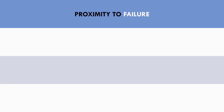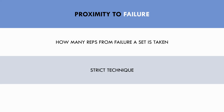So what does proximity to failure even mean? Proximity to failure simply refers to how many reps from failure a trainee performs a set. When we say failure, we are referring to failure to complete another rep with strict technique. So if a trainee starts swinging or jerking, or cuts range of motion, then the set has already been taken to failure. Each set should be taken around 1-3 reps in reserve on average. This is required to stimulate the high threshold motor units, so that all muscle fibres are trained.